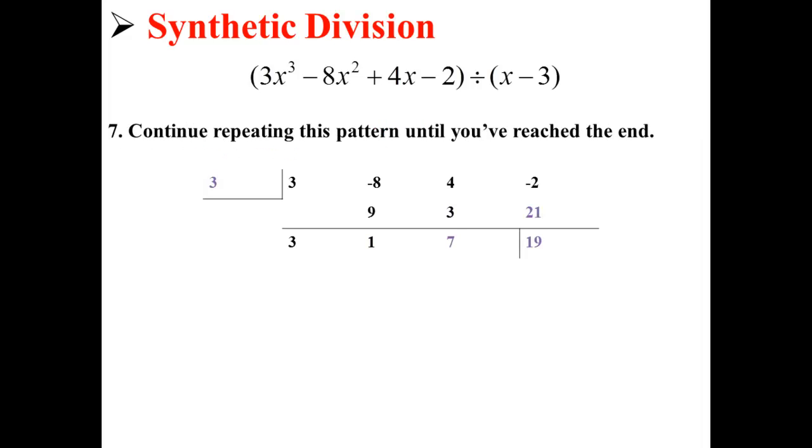Then, we just keep repeating that pattern. Here, we've multiplied 3 times 7 to get 21, and then added it to -2 to get 19.